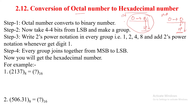Now I am explaining the first method — octal to binary. Step 1: convert the octal number to binary number. Every digit is written separately: 1, 3, 7 — and converted to binary. In octal to binary conversion, 1 digit of octal equals 3 bits of binary.